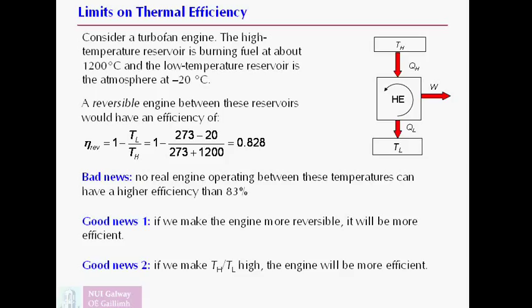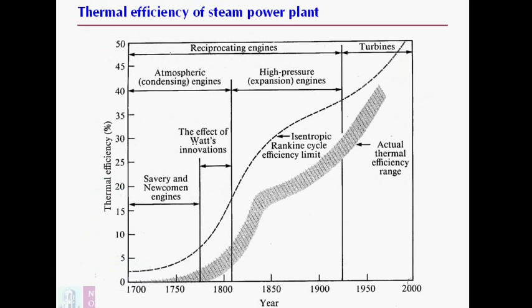These two approaches to improving the efficiency of engines, they're exactly what happens in research and development. And you can see it historically. This is a great graph of the history of steam power. And unfortunately, I don't know where I got it, so I can't acknowledge the people who made this graph. But the fuzzy gray line there is the historical thermal efficiency of steam engines, starting with Newcomen, going through Watt, going right up to 20th century steam power plants up to about 1980.